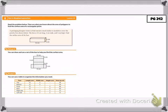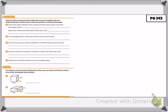A package designer wants to find out how much leather is needed to cover a jewelry box. The box is 12 centimeters long, 3 centimeters wide, and 5 centimeters high. Find the surface area of the box. We can draw and use a net of the box to help us find the surface area. We can also use a table to organize the information. To find the total surface area of the rectangular prism, we would add up the areas of each face.